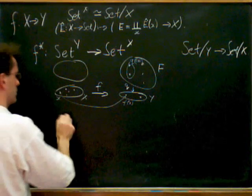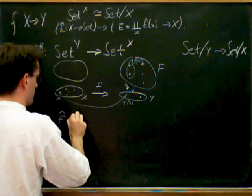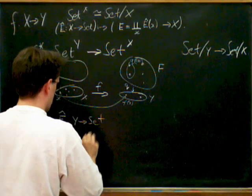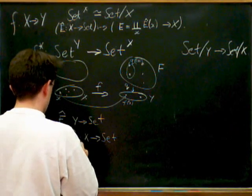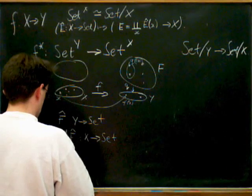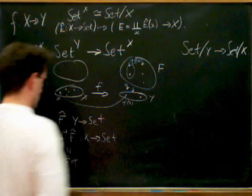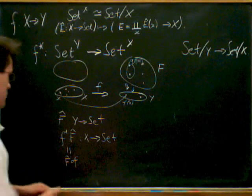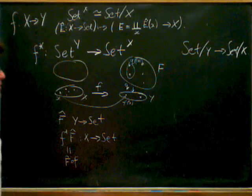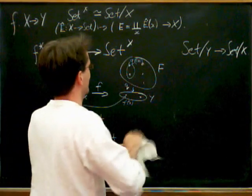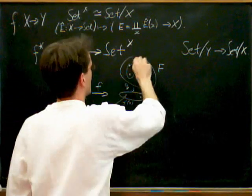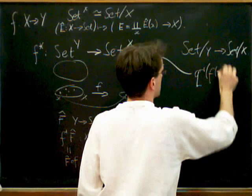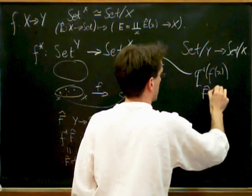So I just define if I've got f hat then goes from Y to set, then f star of f hat going from X to set is just f hat, this is just defined to be f hat composed with f. So I do go from X to Y, from X to Y, and then I compose it to set. So I think I might have to draw something a bit bigger here. So that's possibly the thing there. So what I was indicating there that this was the fibre q inverse of f of x, which I was also writing as f hat of f of x.